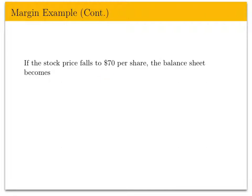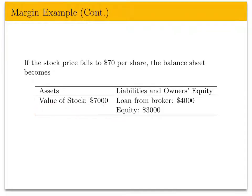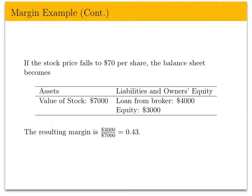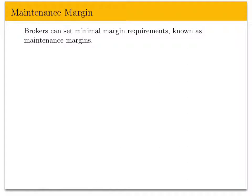Now let's say the stock price falls to $70 per share. The value of stock drops from $10,000 to $7,000. The loan remains $4,000, so the investor absorbs all the loss into equity, which falls from $6,000 to $3,000. The margin is now $3,000 / $7,000 = 0.43.